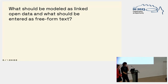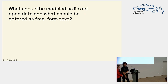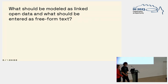At the very early stage of our research process we started asking ourselves: what should be modeled as linked open data and what should be entered as free-form text? Basically, what should be visible and presentable in our database and what should be hidden? The raw data we started with contained quite detailed yet unstructured information — data on the inscription, the artworks and their position, detailed information regarding the history of the object and provenance history, or different descriptions according to Panofsky's levels of interpretation.